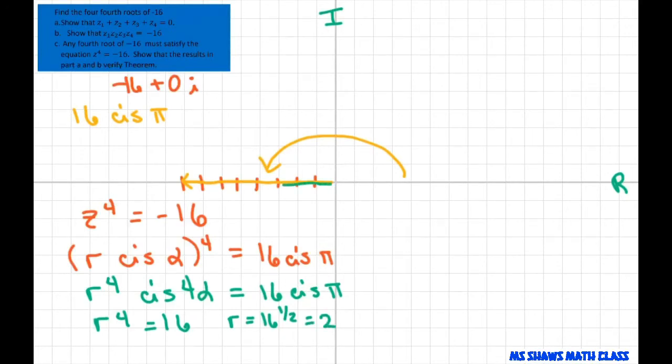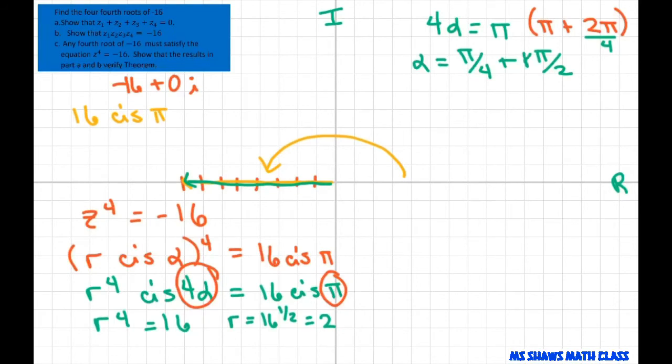We want our R to be positive because we're going to use it when you're plotting polar coordinates. And then our angle, we have 4 alpha equals π. So we want to do π plus multiples of 2π. So we have alpha equals π divided by 4. And if you divide this by 4, you're going to get plus multiples of π divided by 2.